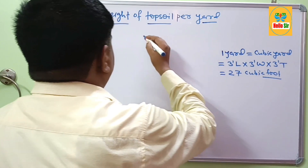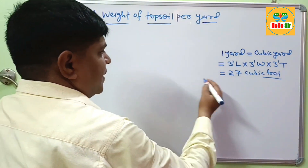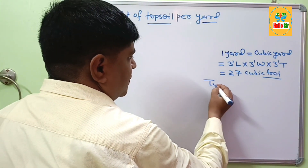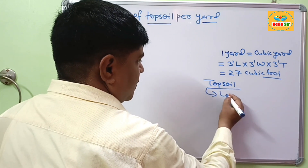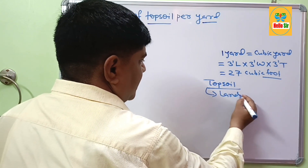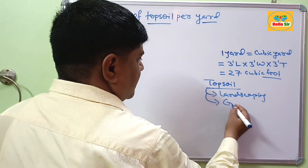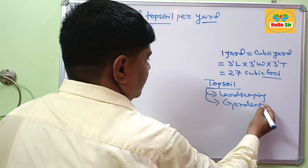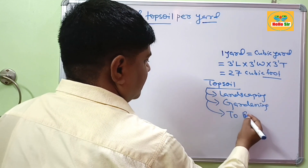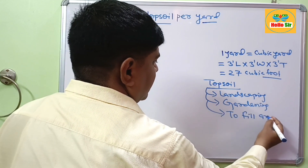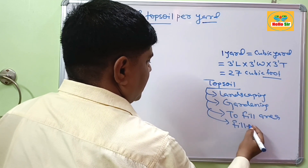Now we have to find out the weight of topsoil per yard. What is the usage of topsoil? Topsoil is used for landscaping projects, even for gardening, to fill an area. It is also called filler material.